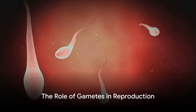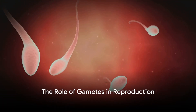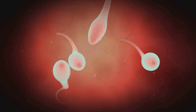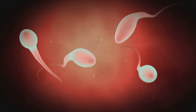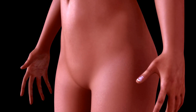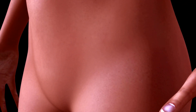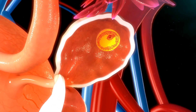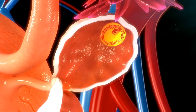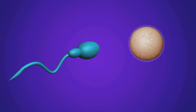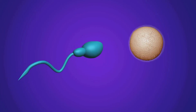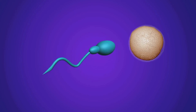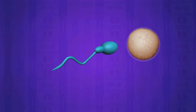In the male, sperm cells are produced — tiny, wriggling entities that carry the genetic blueprint for half a human being. In contrast, the female produces the ovum, a single, much larger cell that houses the other half of the blueprint. The differences between these two types of cells are vast, yet both are essential for the creation of new life.